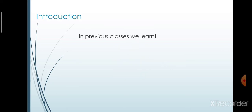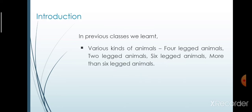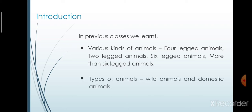In previous classes, we learnt about various kinds of animals. There are 4-legged animals, 2-legged animals, 6-legged animals, and more than 6-legged animals. We also learnt about types of animals. There are 2 types of animals: wild animals and domestic animals.